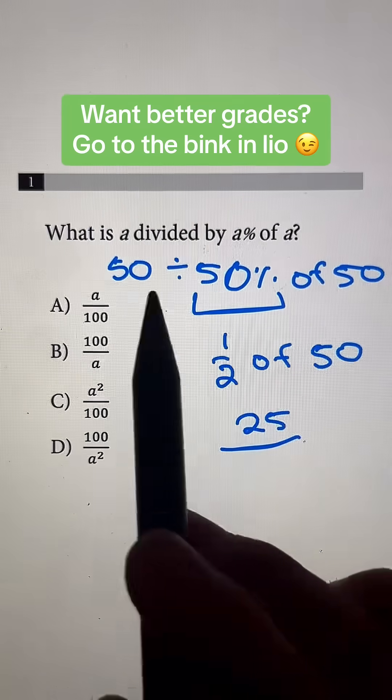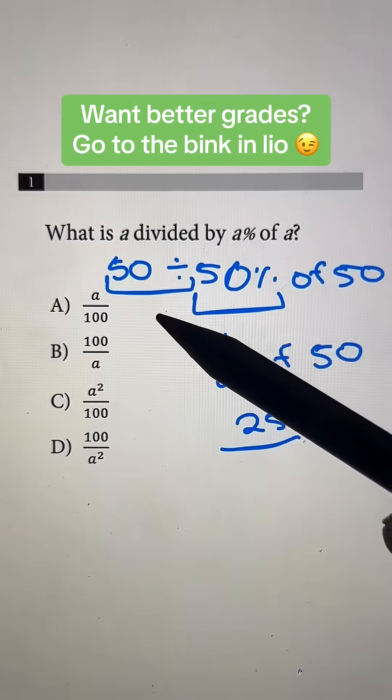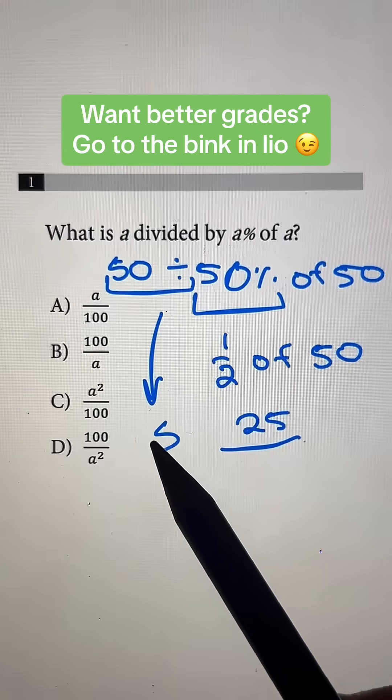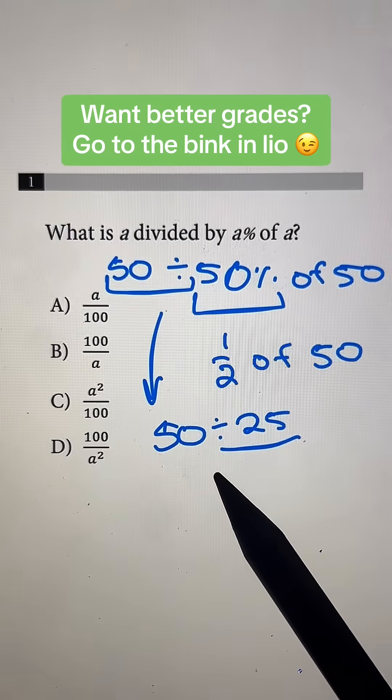So now we have 25 right here. And 50 divided by it, we just have that in the front. So we're going to drop that down. So now we have 50 divided by 25, which is going to be 2.